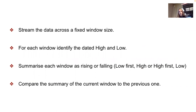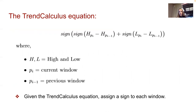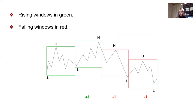The basic steps of the trend calculus algorithm are: first, stream the data across a fixed window size; then for each window, identify the dated high and low; next, summarize each window as rising or falling based on the order of occurrence of the low and high values; then compare the summary of the current window to the previous one; and finally assign a sign to each window using the trend calculus equation.